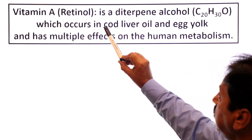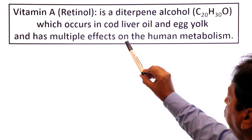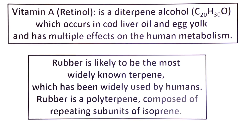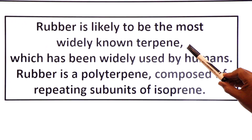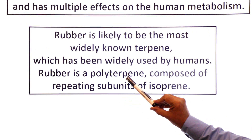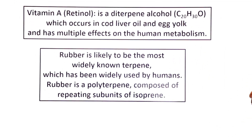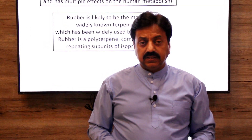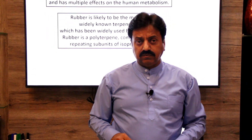Rubber is likely the most widely known terpene and has been widely used by humans. Rubber is a polyterpene composed of repeating subunits of isoprene. Thank you dear students, wishing you all the best.